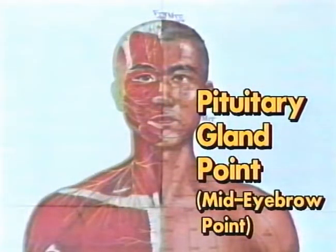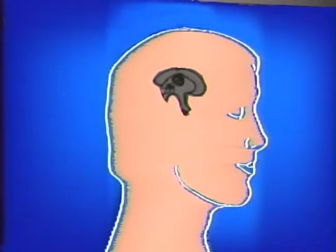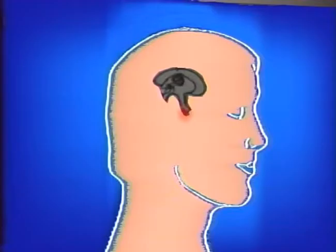The pituitary gland is located about three inches inside the skull from the mid-eyebrow point. The pituitary gland is part of the crystal palace in the center of the brain. This energy center is said to be the place to raise the spirit. When the pituitary point is open, one feels wisdom. When blocked, there is a sense of indecisiveness.